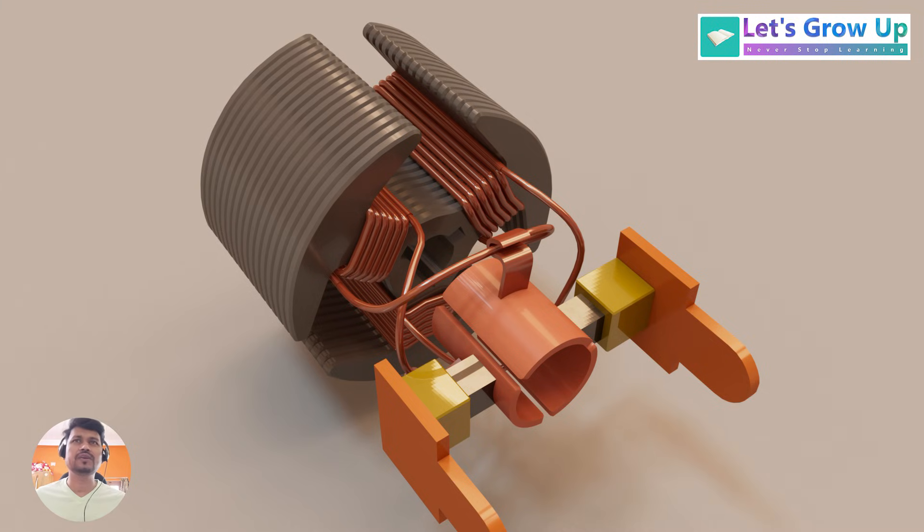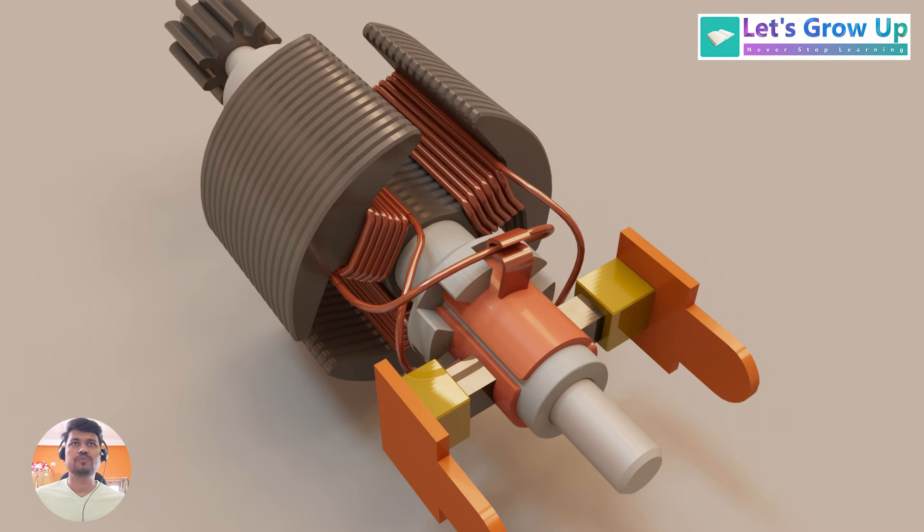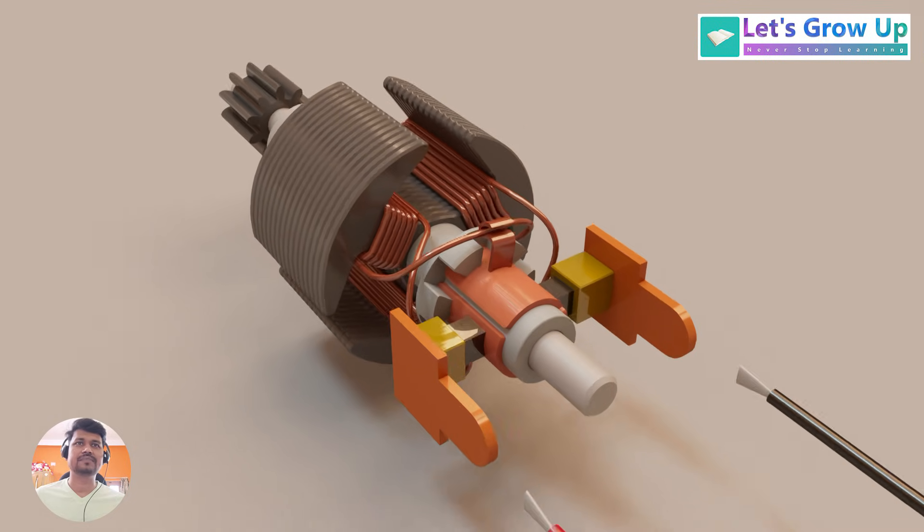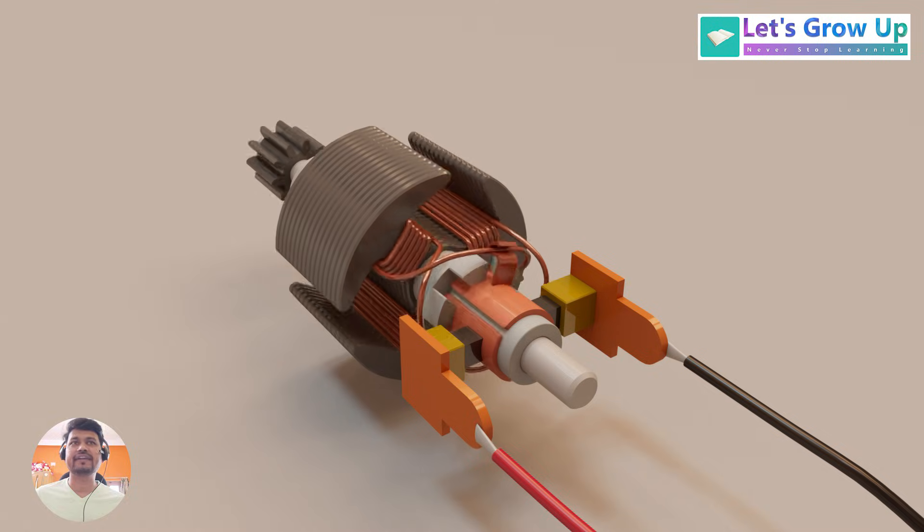They are made of carbon, or sometimes with metal additives like copper. Their primary function is establishing an electrical connection between the external power source and the rotating armature.